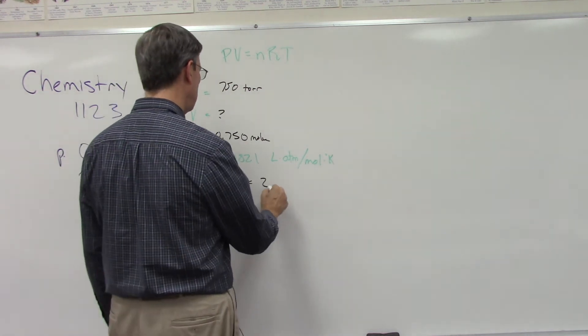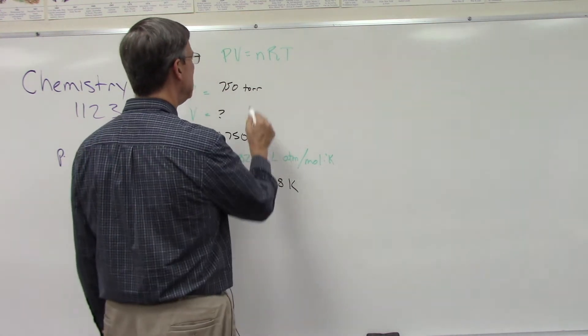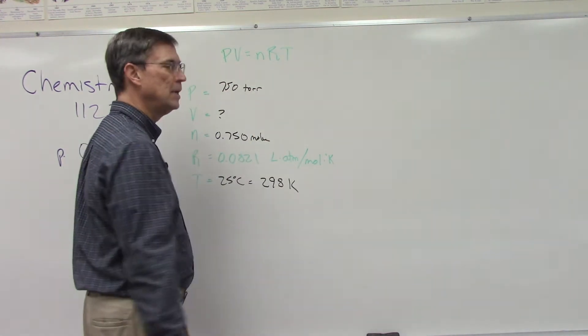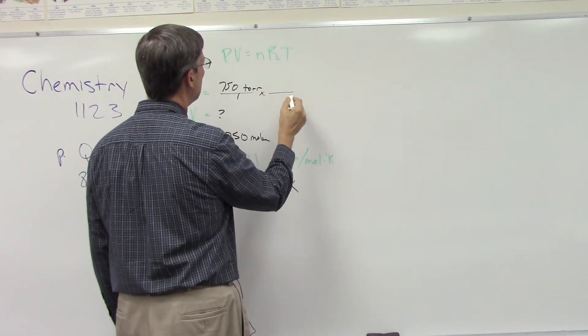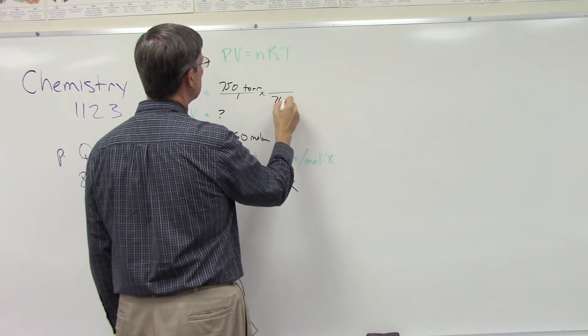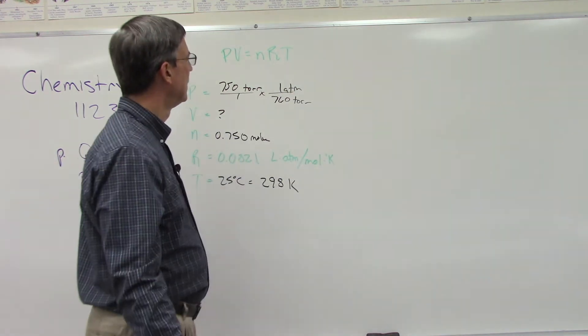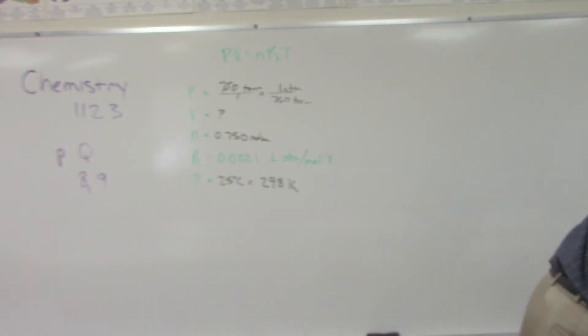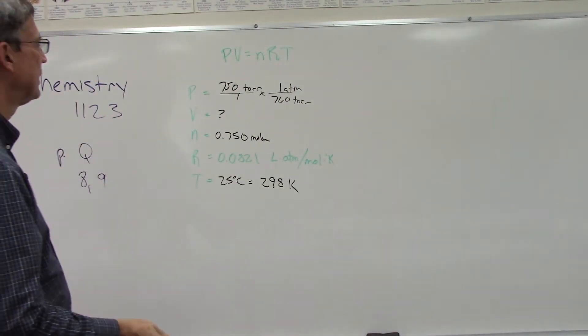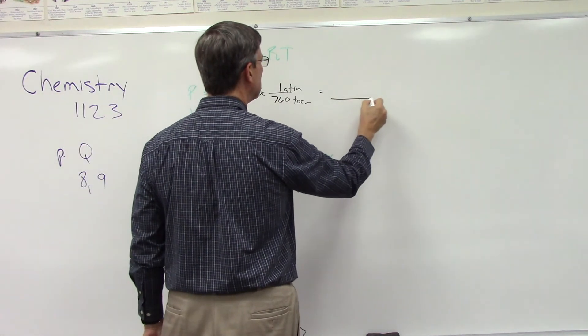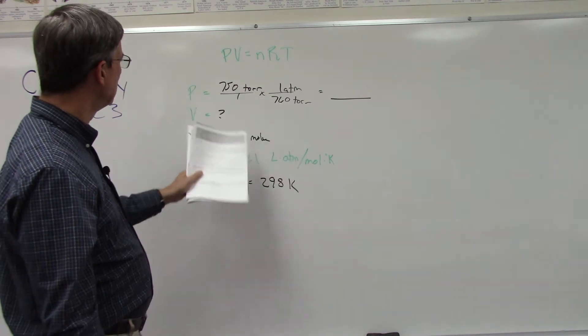So would that be 298 Kelvin, right? That's easy. Now we have to convert this into atmospheres, and 760 torr is one atmosphere. When you multiply that out, you will get a decimal number. Go ahead and carry that out to three decimal places. Everything else now looks like it's in the proper units.